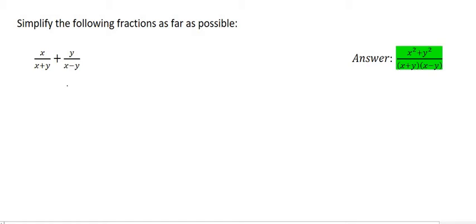What would you say the common denominator is here at the bottom? Many people sometimes tell me it's xy, because they see an x and they see a y. However, we said in the previous video that if they look different at all, then they are completely different. So your common denominator is just going to be (x+y) and (x-y). That is your common denominator.